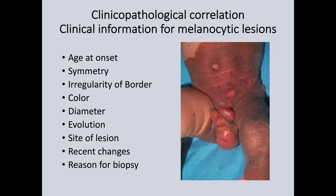The white areas are often representing regression. There's a lot of talk about diameter of lesions, and a dysplastic nevus or melanoma is considered six millimeters in diameter or more, though I'm not really convinced about that — I can't see why a melanoma can't be three millimeters in diameter. Evolution of the lesion means it has grown over time; perhaps the surface has changed, or a nodule has developed at an edge, which gives you a really good clue as to what's going on.